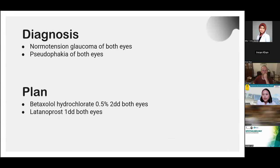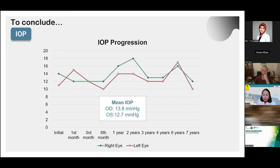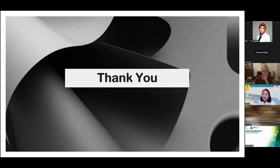Humphrey results in both eyes showed similar findings to the initial visit. We advised the patient to continue controlling regularly at our outpatient clinic every three months with the same medication. To conclude this seven-year glaucoma journey: mean IOP remained below 15 mmHg after the addition of latanoprost. OCT showed progression of RNFL thinning on the left eye from superior-temporal thinning to superior-temporal and inferior thinning, however the right eye did not progress. Humphrey showed no significant visual field defect progression in either eye.